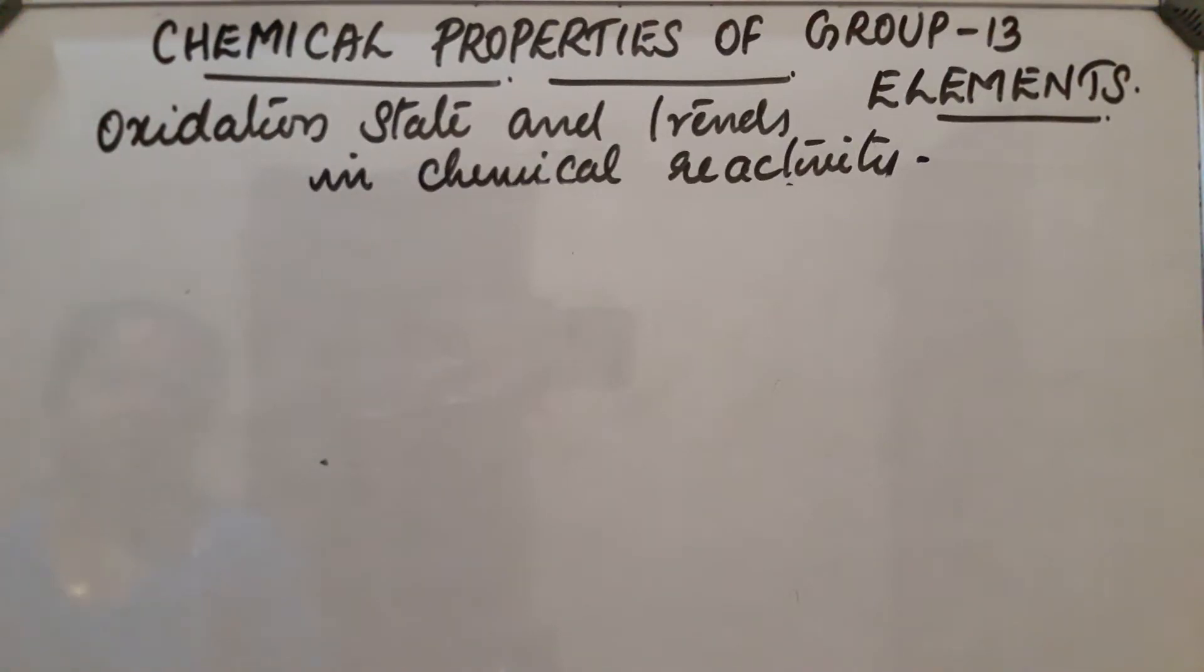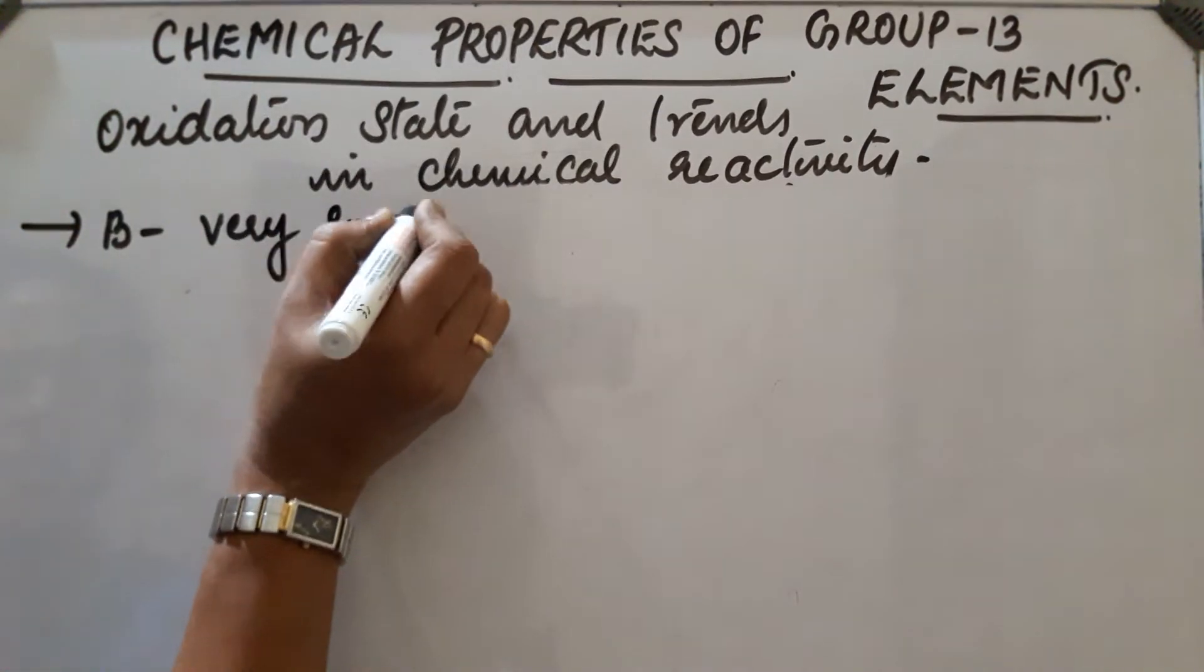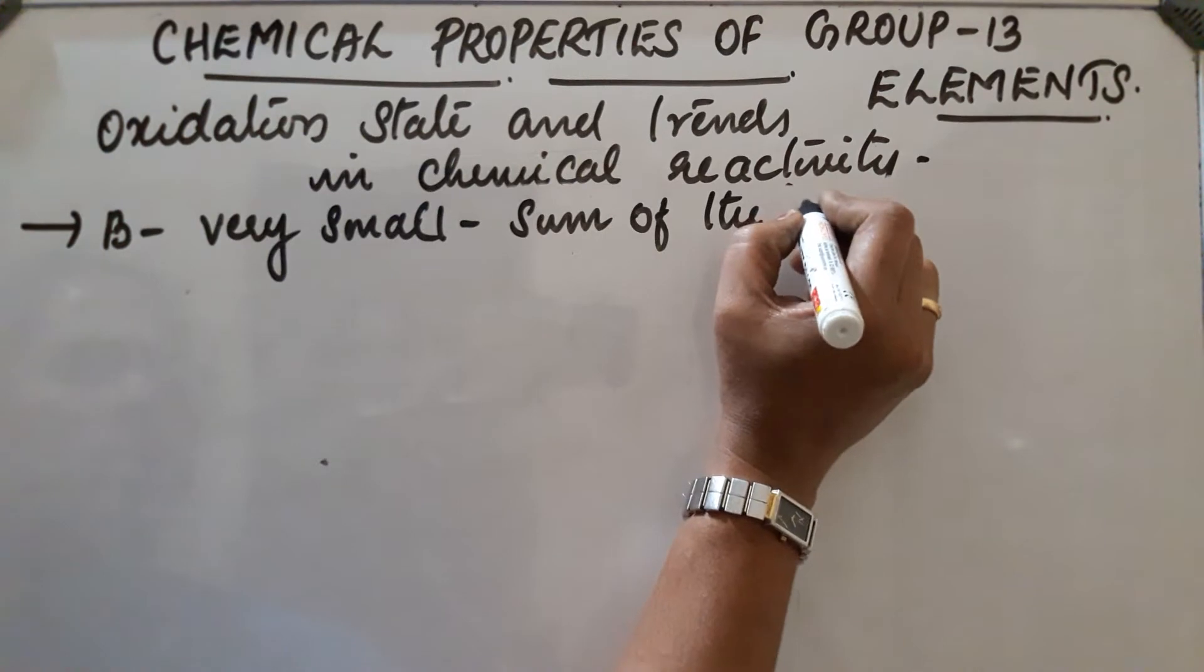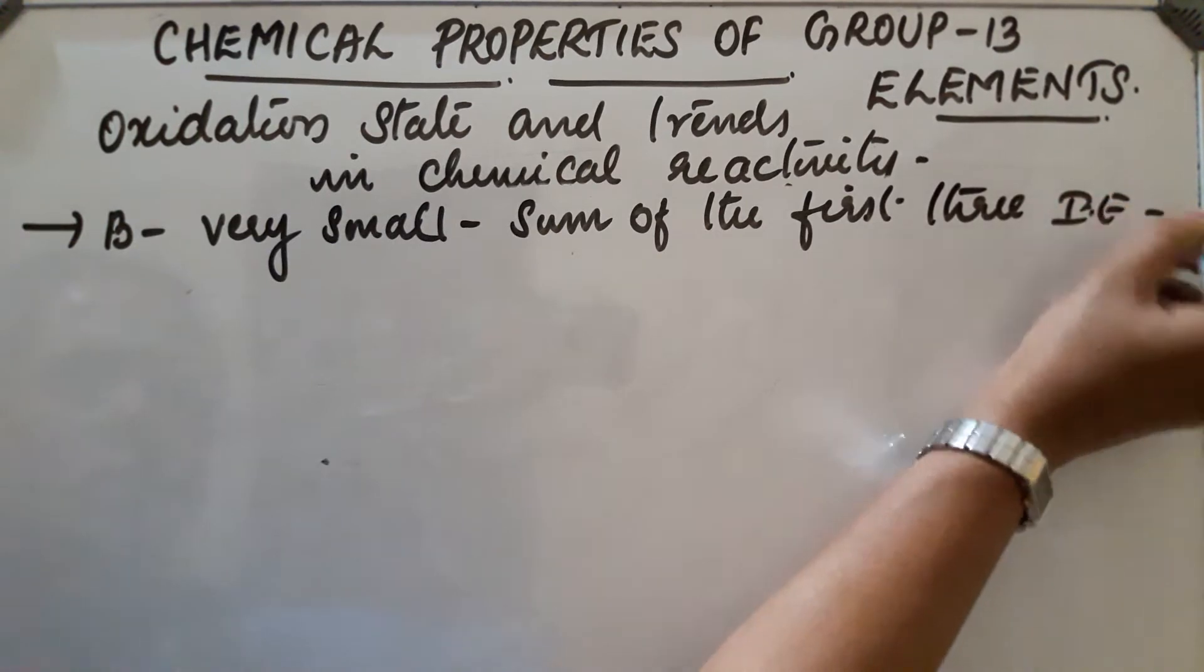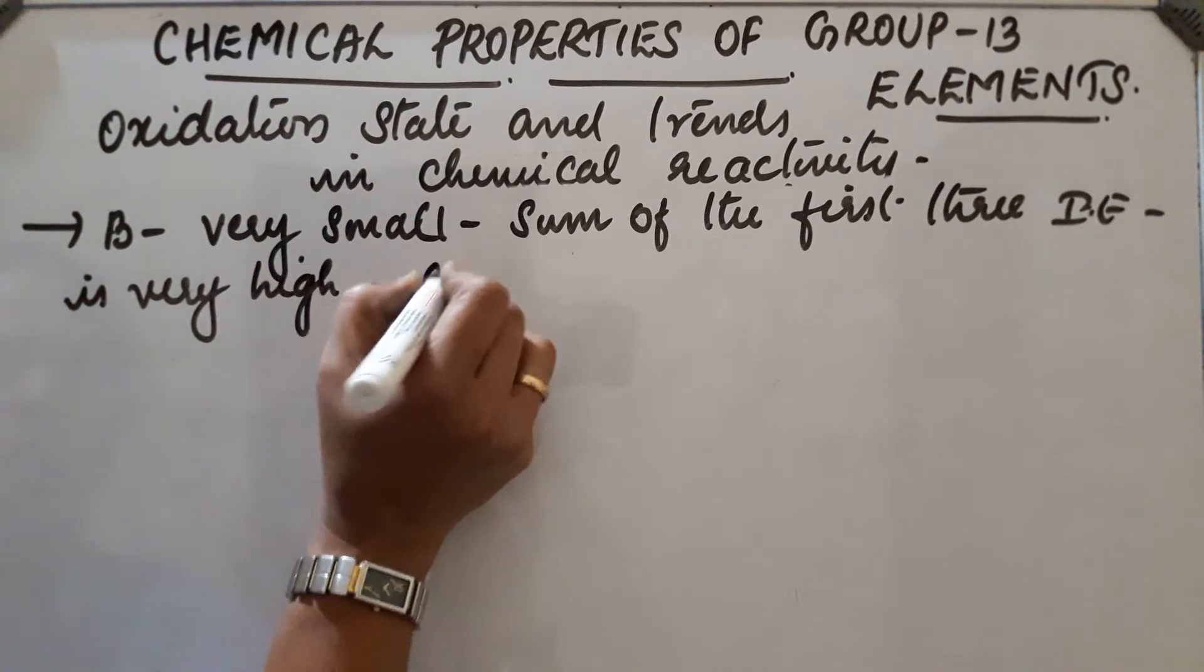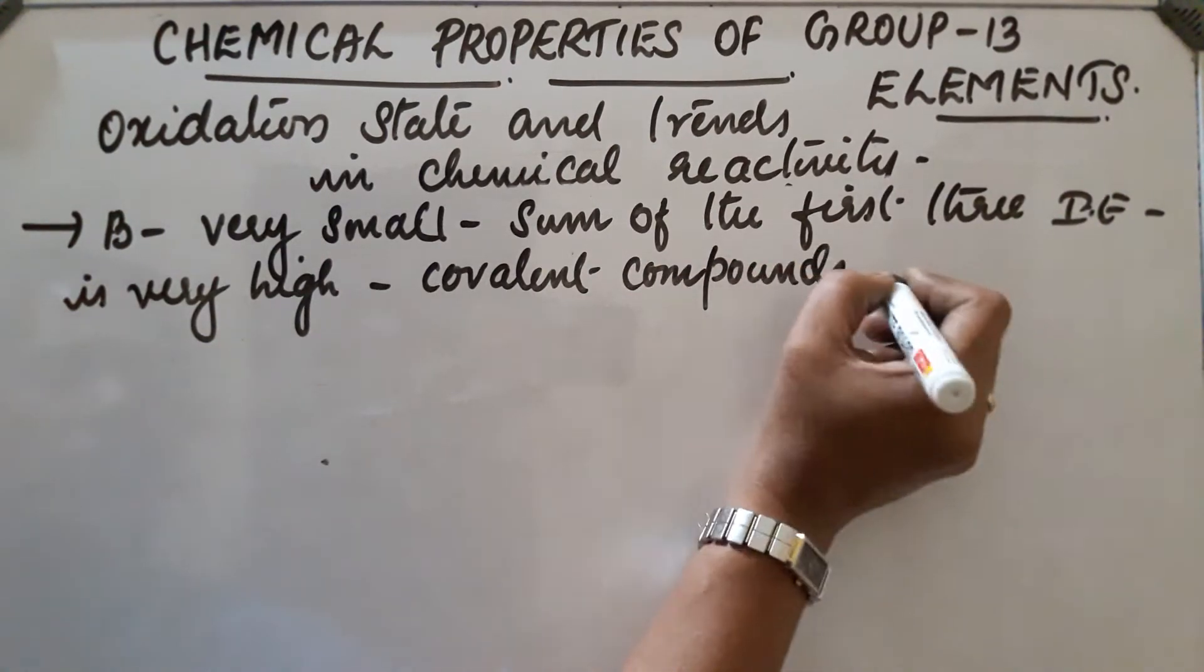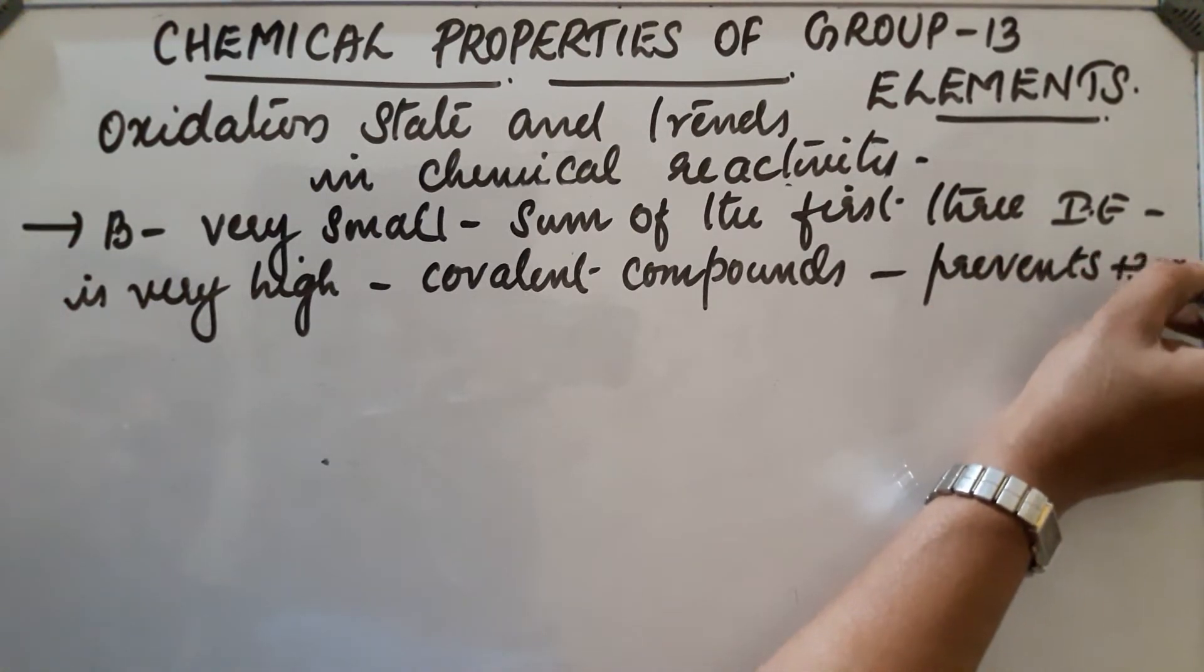Chemical properties of group 13 elements: oxidation state and trends in chemical reactivity. First element is boron. Boron is very small in size and the first three ionization energies are very high. So they form covalent compounds and prevents formation of plus three ions. They do not form plus three ions, they form covalent compounds.